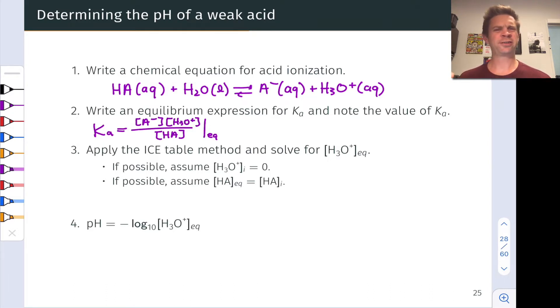If the concentration of the acid is quite large with respect to 10⁻⁷ moles per liter, we can assume that there's essentially no hydronium ion present initially. The initial concentration of H₃O⁺ is equal to zero. This will make the math much simpler.